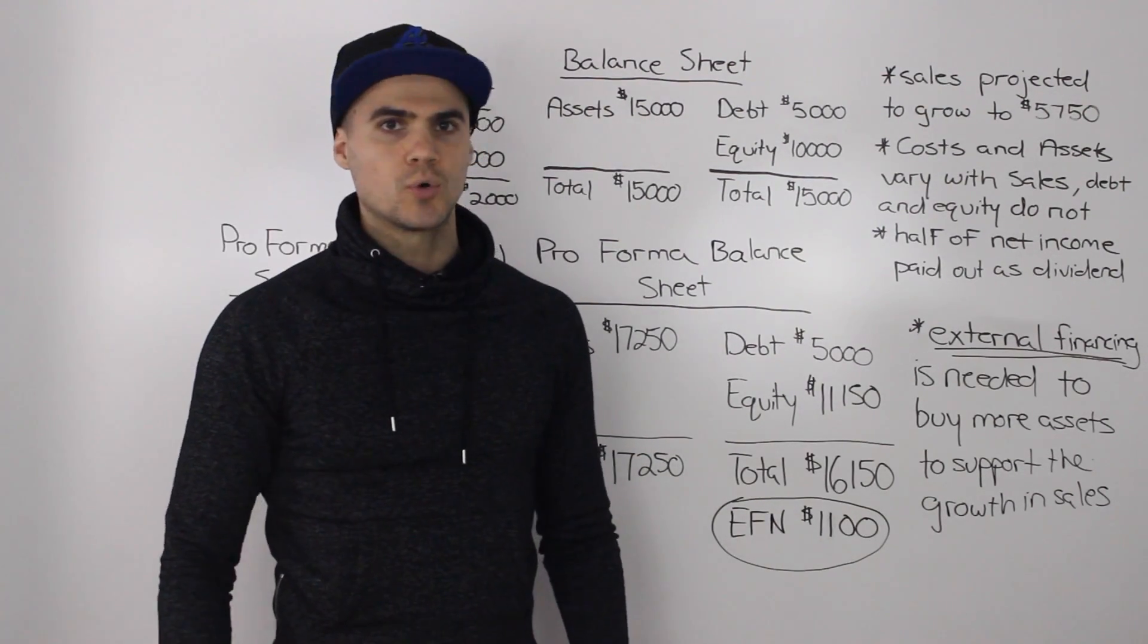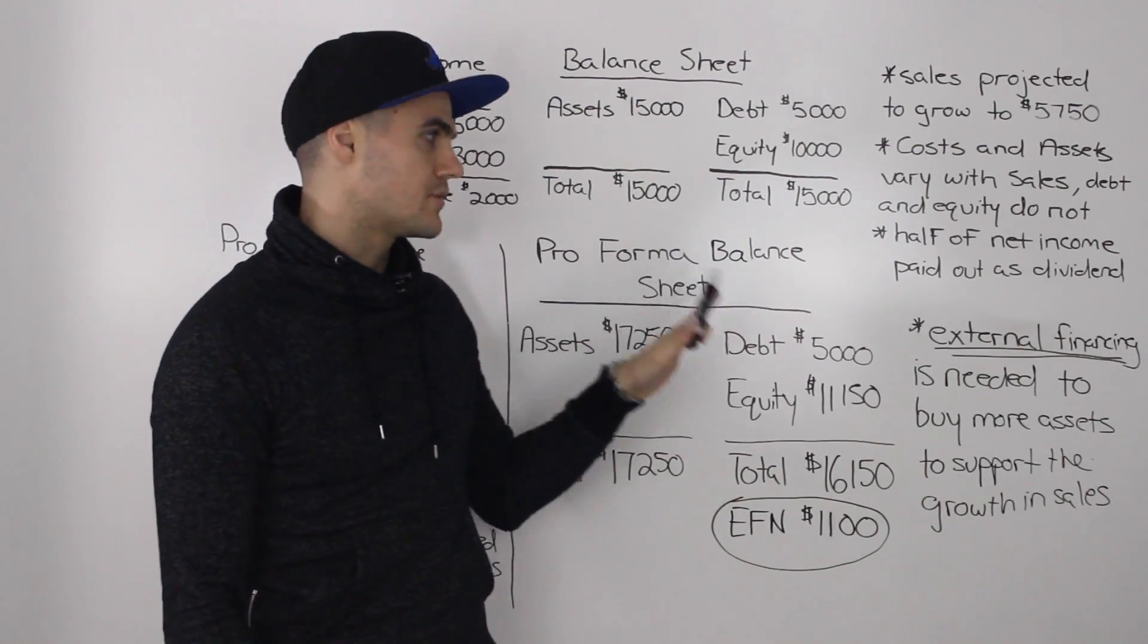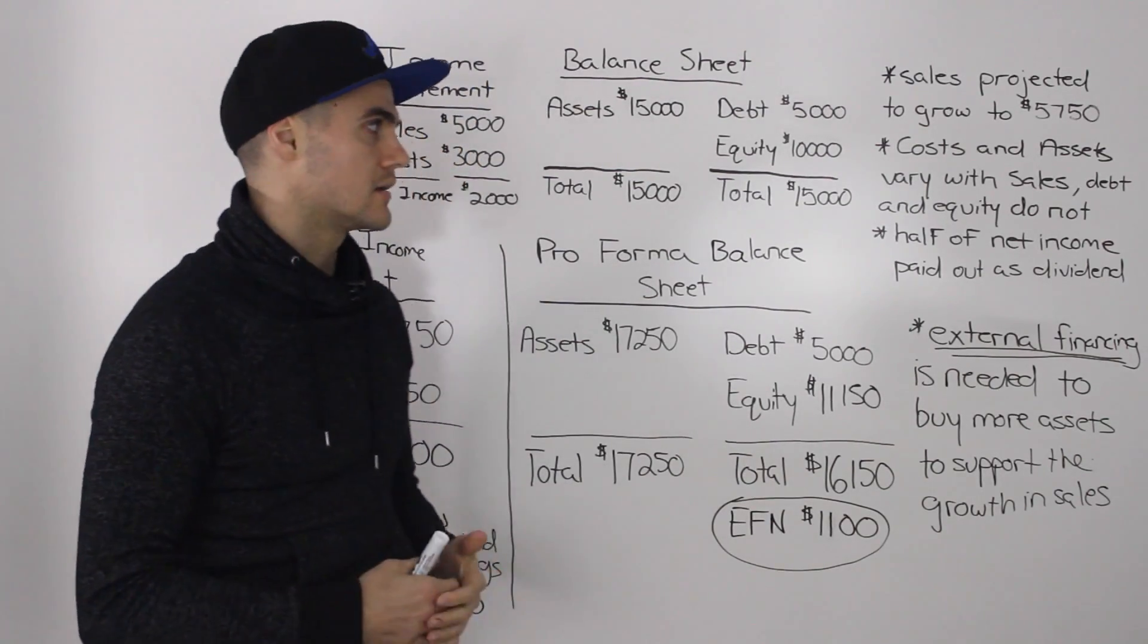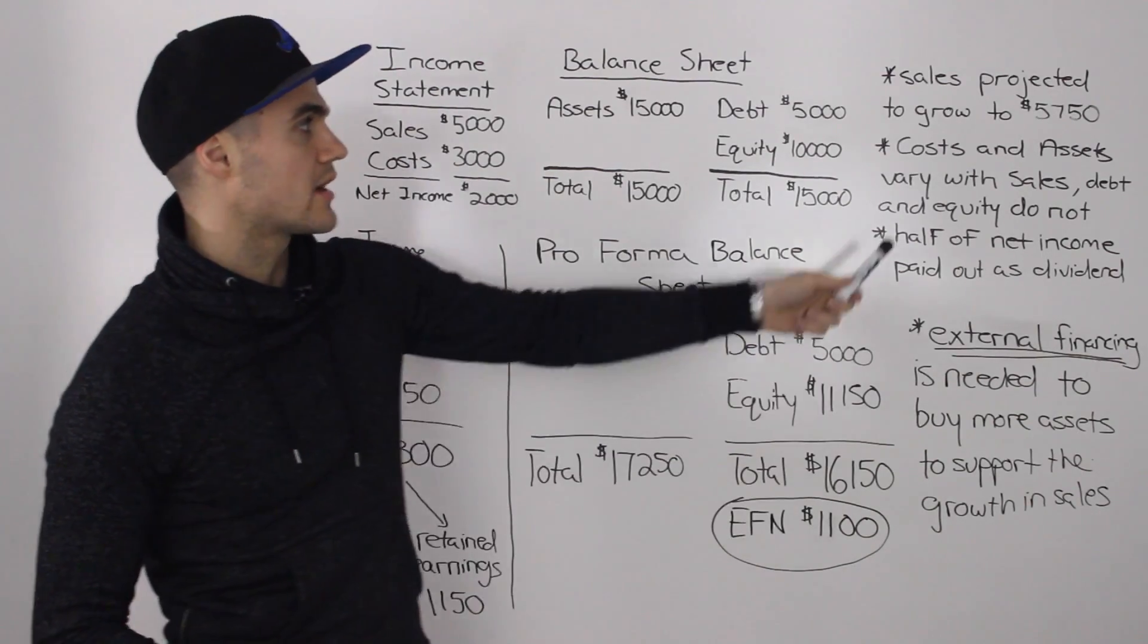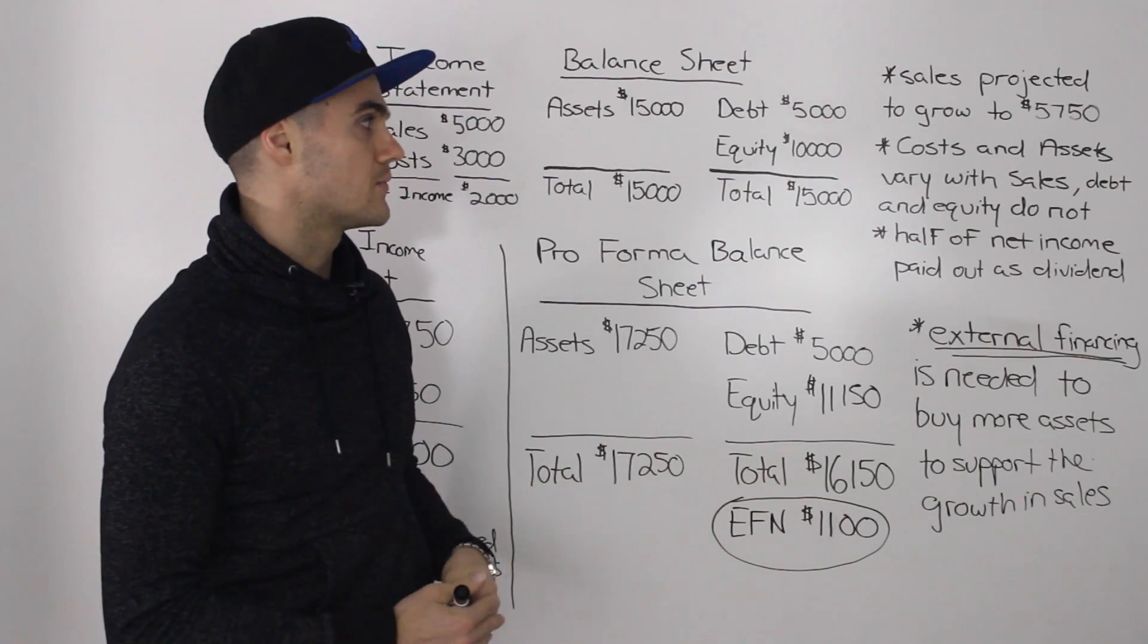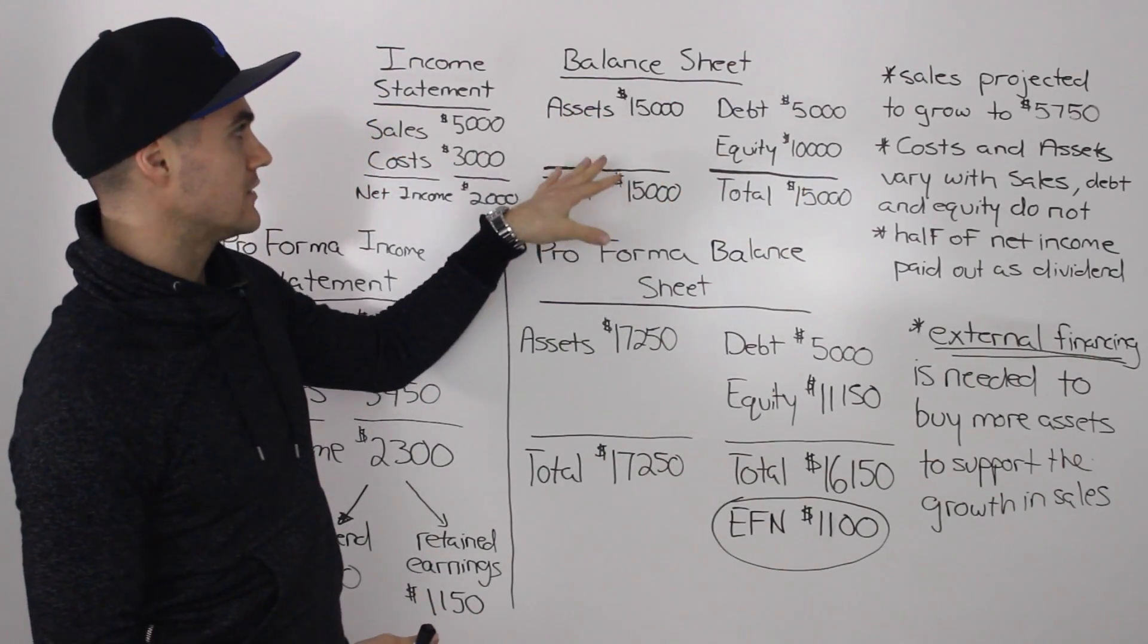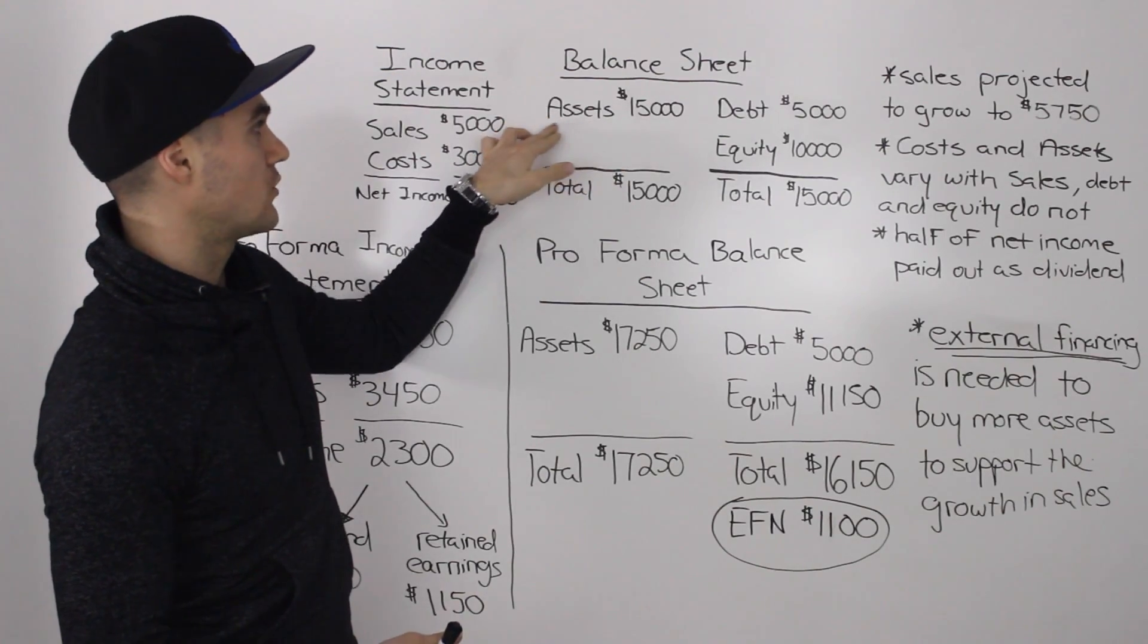So whenever you run into a question asking for the external financing needed, just follow this basic process and you'll get it. Sometimes the information will change. So sometimes they'll actually give you the percentage of sales increase instead of the absolute amount. Sometimes you'll have more detail in the balance sheet.